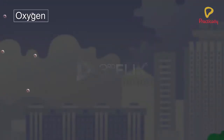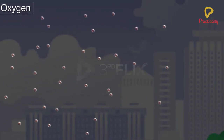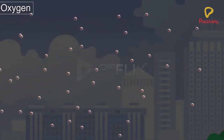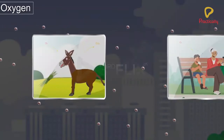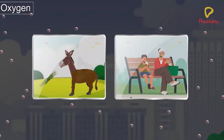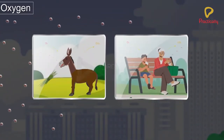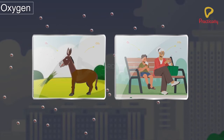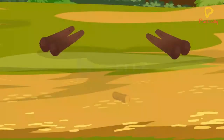Oxygen. Oxygen is an essential component of air that is used by animals and human beings for the process of respiration. It is also required for combustion.